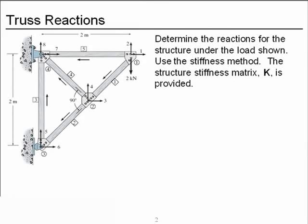Here's our truss. It has five members, four nodes, and is supported with a pin and a roller. It is the same structure we used in the example for Section 5 of Chapter 14. We're going to determine the reactions for the structure using the stiffness method, using the structure stiffness matrix, capital K, that we obtained from the previous example.